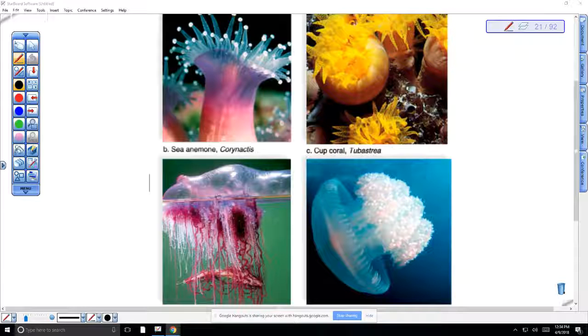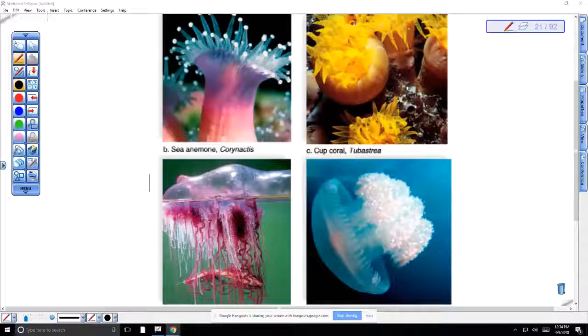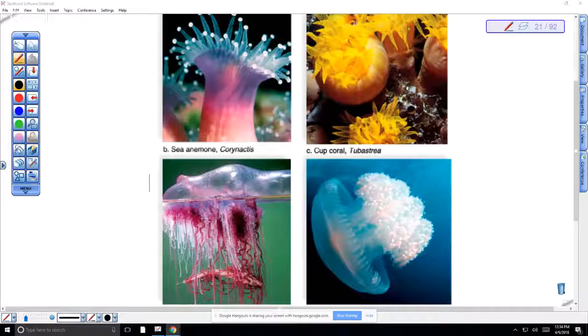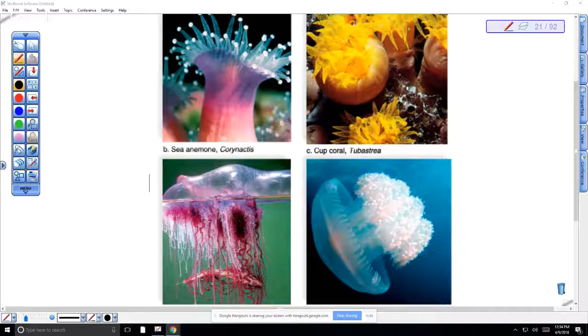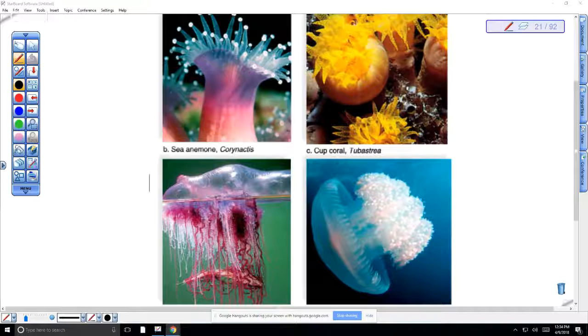In the phylum Cnidaria, there are generally two different types of body forms. We talked about the polyp, which is generally sessile and has its tentacles facing up, like the sea anemone. And then we talked about the jellyfish, where the tentacles are facing down and they're mobile and they swim and create the current that pushes food into their tentacles. But how do these organisms feed?